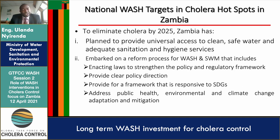In order to eliminate cholera in Zambia by 2025, a number of interventions are being done. One is to ensure universal access to clean and safe water and adequate sanitation and hygiene services, especially for those in hotspots. Secondly, to embark on a reform process for WASH and waste management, including enacting laws to strengthen the policy and regulatory framework. Thirdly, to provide a framework responsive to SDG number six, and to address public health, environmental, and climate change adaptation and mitigation.